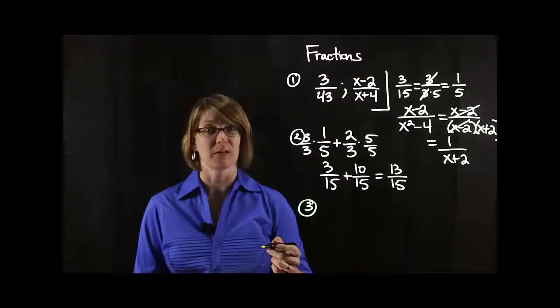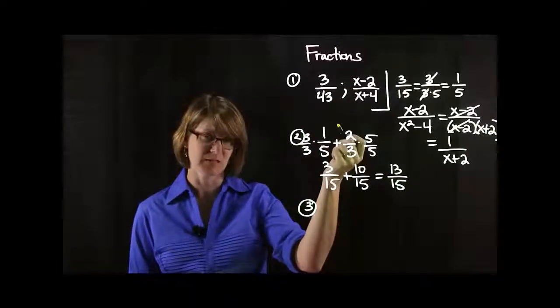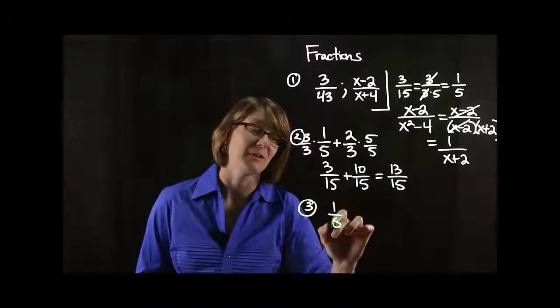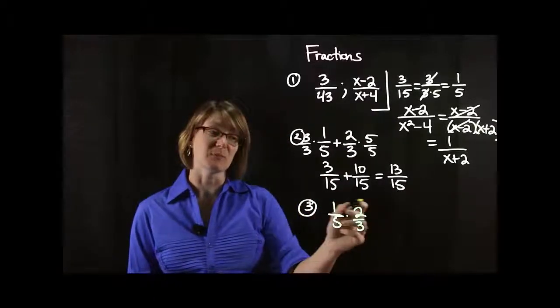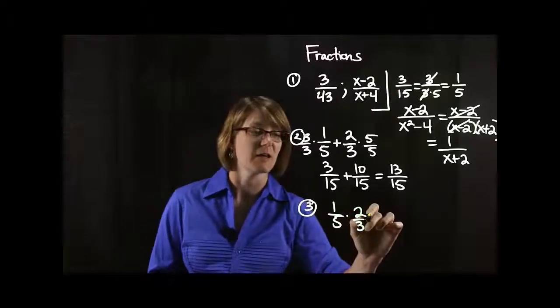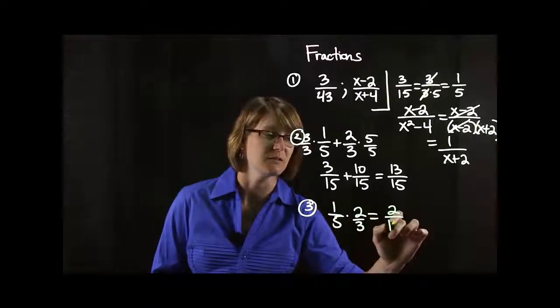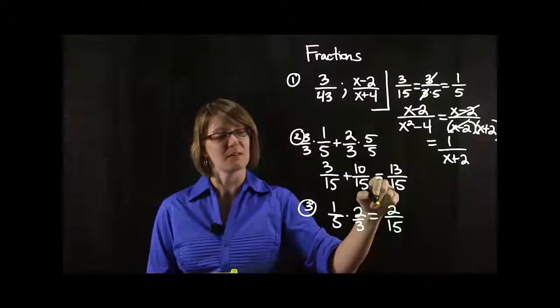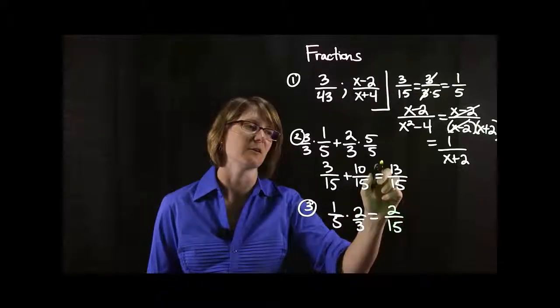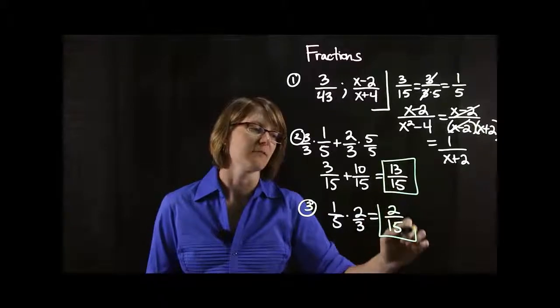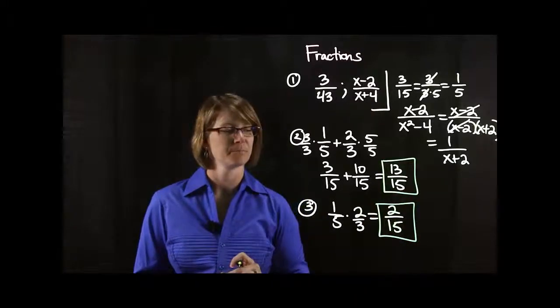Third thing we're going to do here then is multiplying. So let's say we're going to multiply these same two fractions. Multiplying is actually a lot easier, believe it or not. Multiplying you can just multiply straight across. So that's going to end up giving us 2 fifteenths. And then maybe we can look at that and see if we can reduce it, but obviously 2 won't go into 15 so that's going to be our final answer. So we've got final answer here, final answer here.